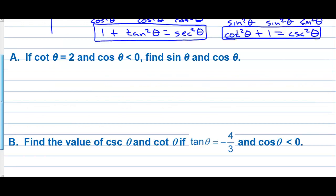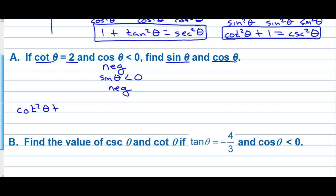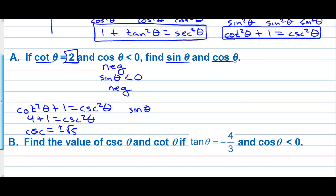Letter A. If cotangent of theta is two and cosine of theta is less than zero, find sine and cosine. Well, if cosine is negative but cotangent is positive, then sine of theta is also negative. We have cotangent squared theta plus one equals cosecant squared theta. Squaring cotangent: four plus one equals cosecant squared. So cosecant equals plus or minus the square root of five. Since sine is negative, sine equals negative one over the square root of five, which equals negative square root of five over five.